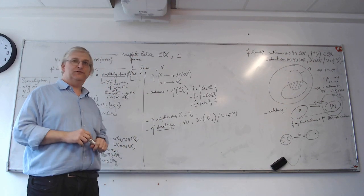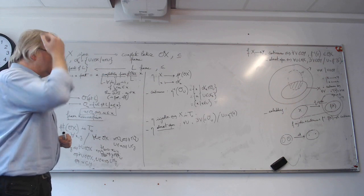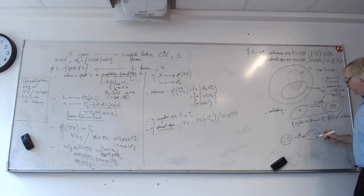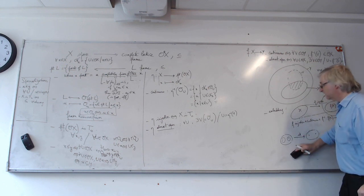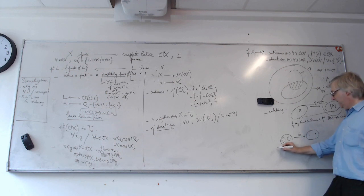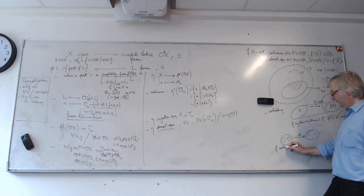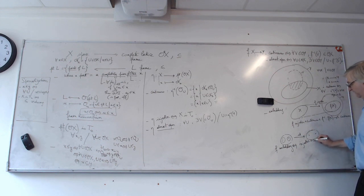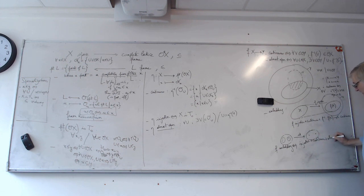In university you learn that there are nice cases where you only need to check continuity and injectivity — in the case of compact Hausdorff spaces, which are very nice objects. But I won't talk about that today. You can check that F is a topological embedding if and only if it is injective, continuous, and almost open. And that is the reason for that definition.